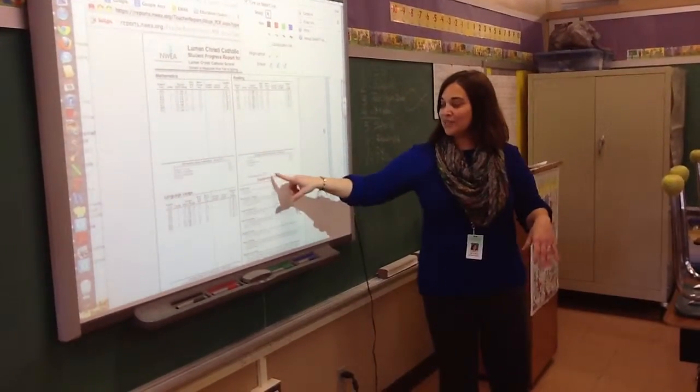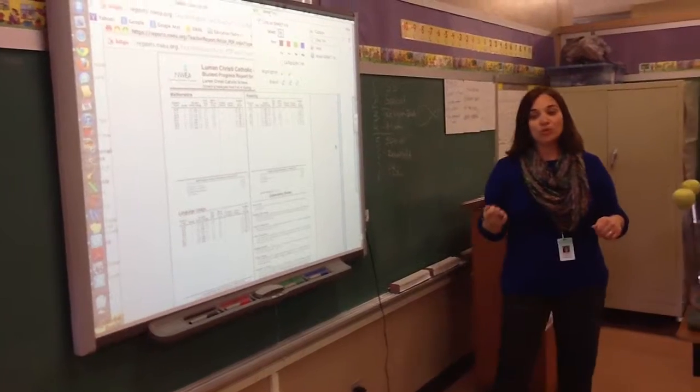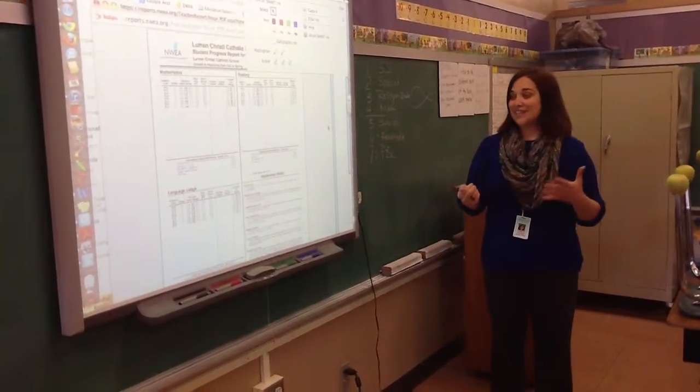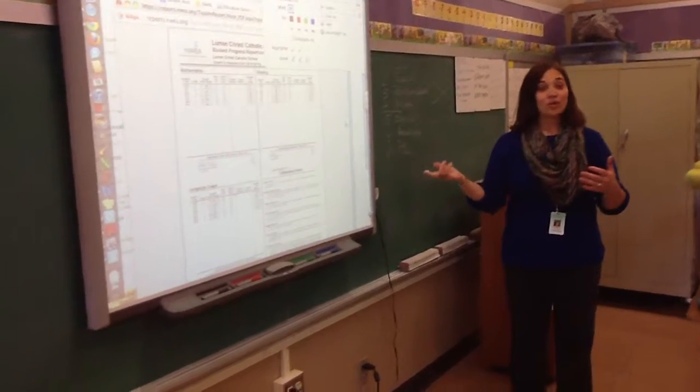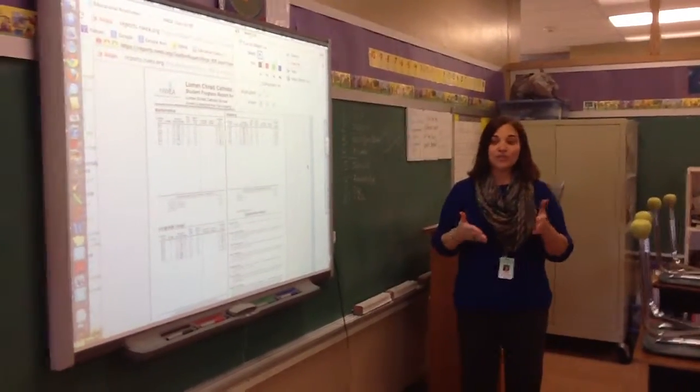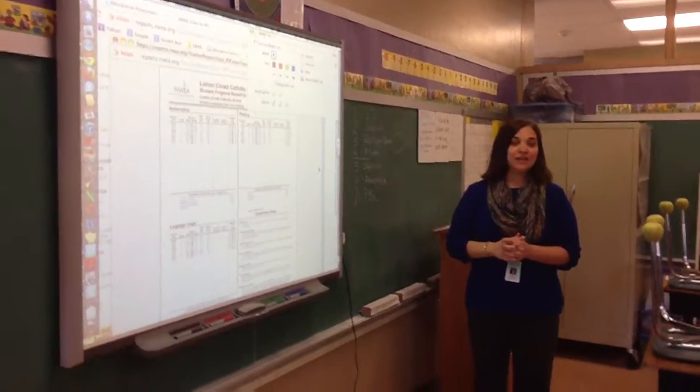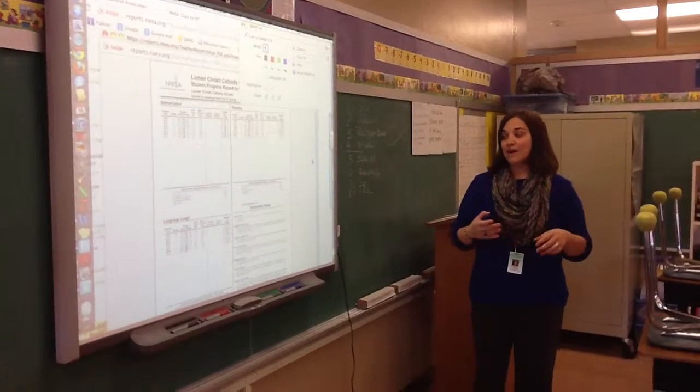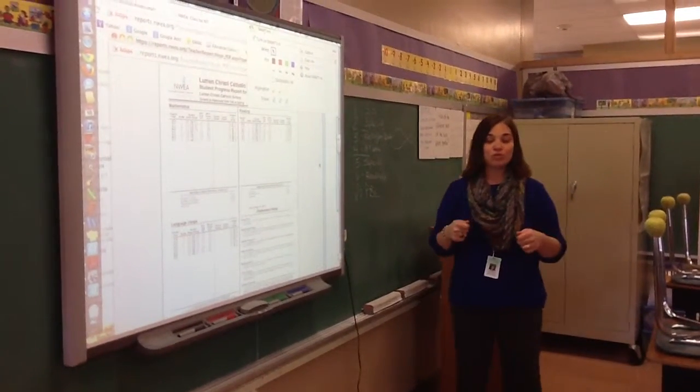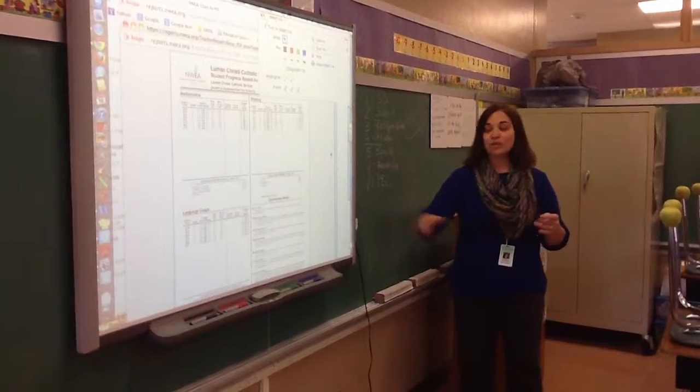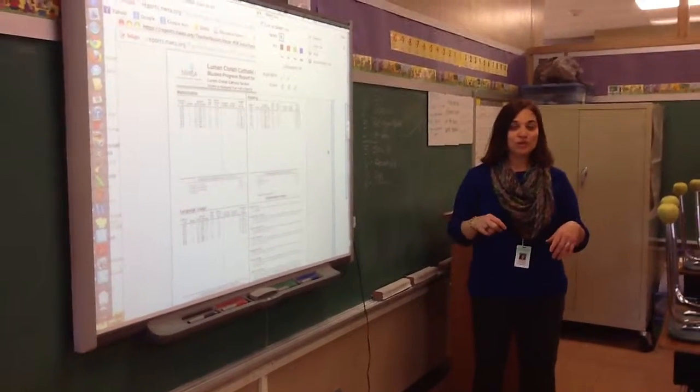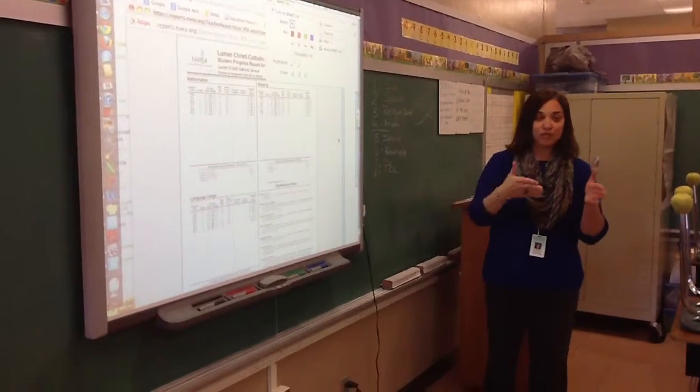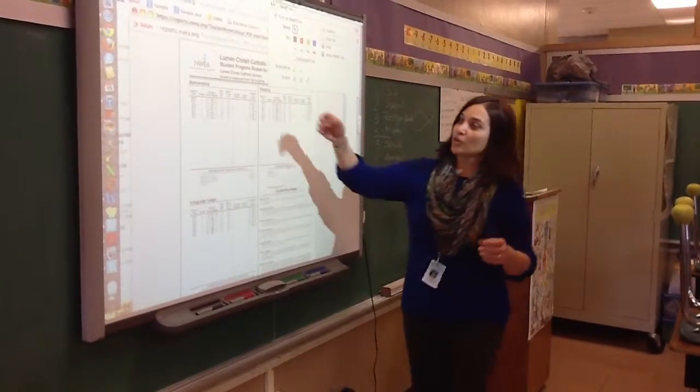In reading, we go with the Lexile scores here. When they pull a book off of the shelf, they easily can see if it's within their Lexile range, and if it is, they know that they will completely be able to understand that text and comprehend what they are reading. We have had students who pulled books that are too hard or too easy. We go right back to that Lexile score and use that to help guide where their reading material should be coming from.